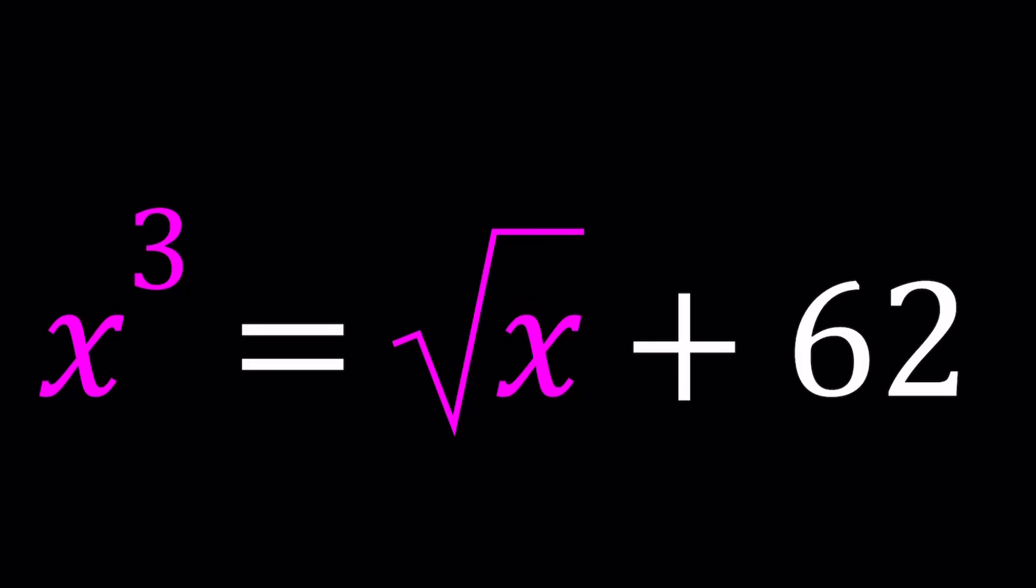Hello everyone, in this video we're going to be solving a radical equation. We have x cubed equals square root of x plus 62 and we're going to be solving for x values. I'll be presenting two methods and the first method will be more straightforward.